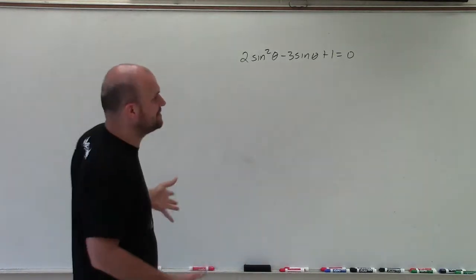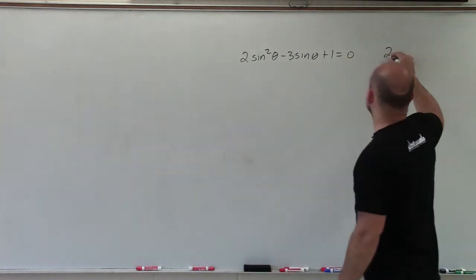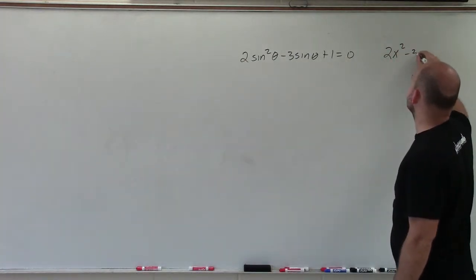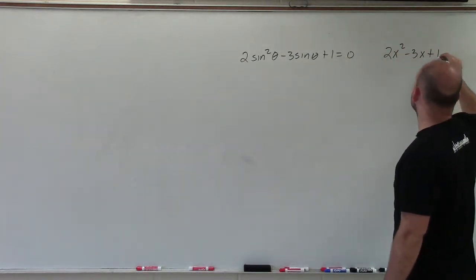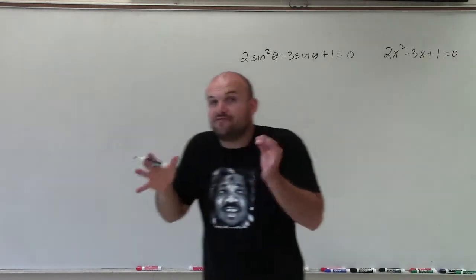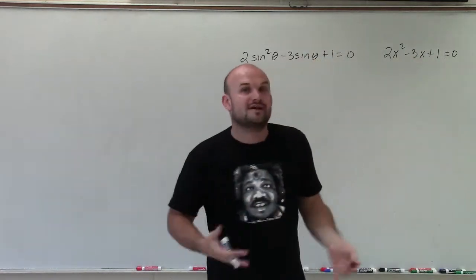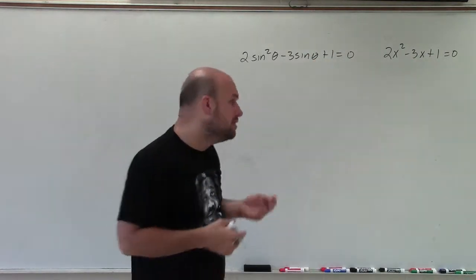So immediately, what I like to do is forget about factoring with sine and just factor with your variables. So I have 2x squared minus 3x plus 1, and let's set it equal to 0. I just need to factor this.